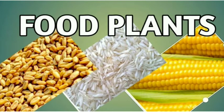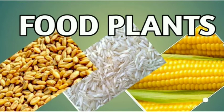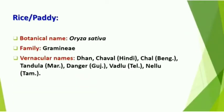Hello, my dear students. Welcome to the botany class. In today's class, we shall discuss about the first aspect of economic botany, that is food plants. We shall start with our class on food plants. In food plants, we are supposed to discuss about some of the cereals like rice, wheat, sugarcane, and some of the pulses like Bengal gram and pigeon pea.